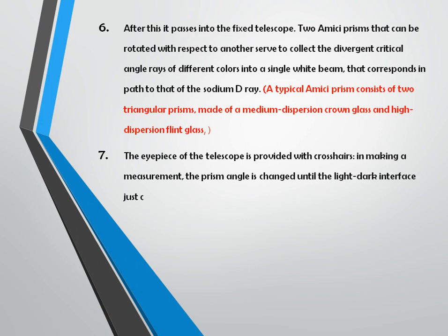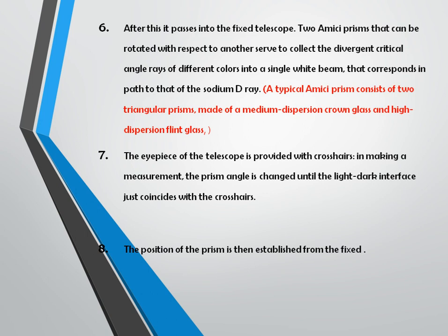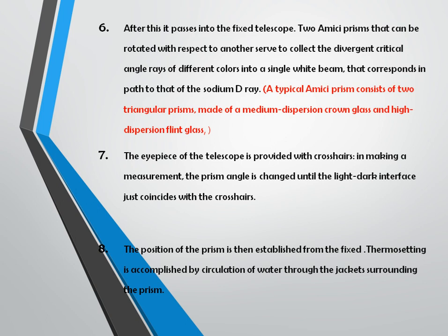A typical Amici prism consists of two triangular prisms — actually three prisms in a single Amici prism unit — made of medium-dispersion crown glass and high-dispersion flint glass. The eyepiece of the telescope is provided with a crosshair. In making a measurement, the prism angle is changed until the light-dark interface coincides with the crosshair — half the view will be dark and half will be light. The temperature is controlled by circulating water through a jacket surrounding the prism.